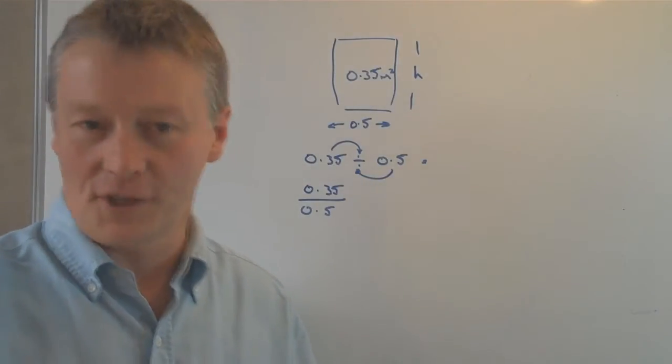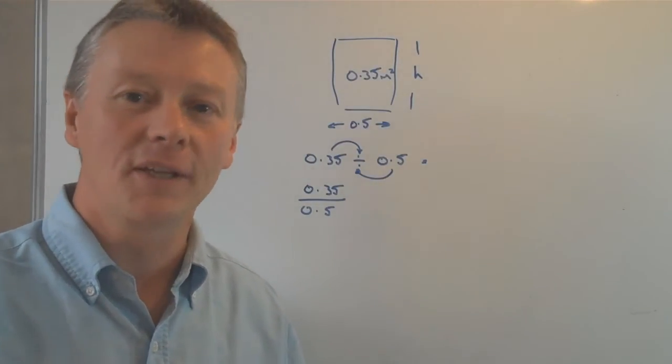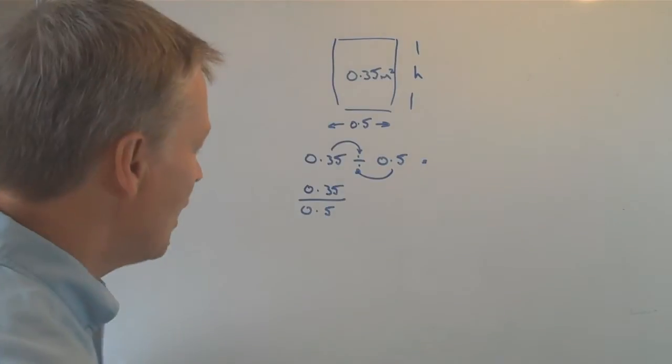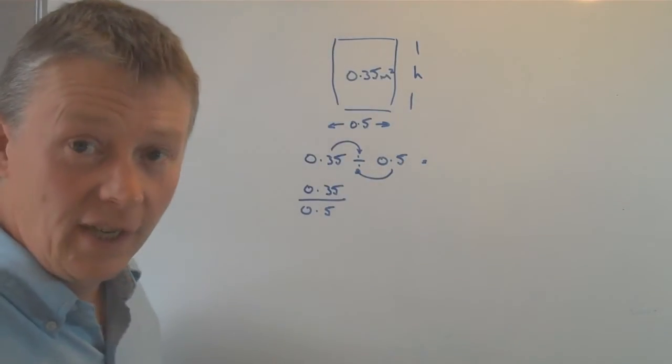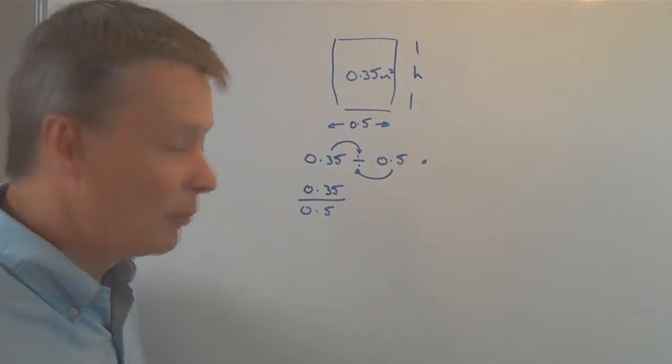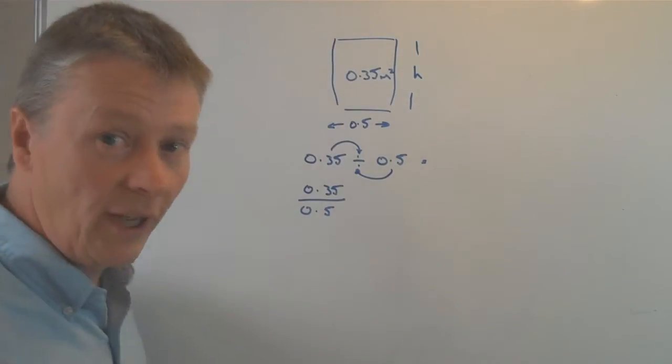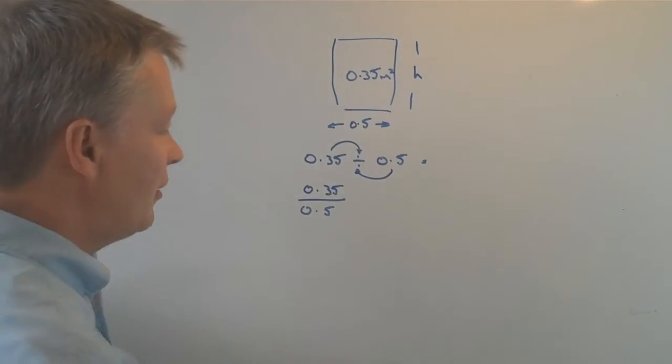So what I can do firstly is move the decimal point along one place towards the right in order to make sure that this is a whole number. If I do it to the bottom, I have to do it to the top.